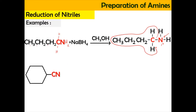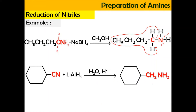You can also have a cyclic cyanide compound reacted with lithium aluminium hydride followed by hydrolysis — it will become CH2 and NH2, forming a primary aliphatic amine. Similarly, a nitrile can be reduced using lithium aluminium hydride and hydrolysis (H2O and H⁺).